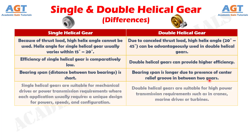Difference number 9: single helical gears are suitable for mechanical drives or power transmission requirements where each application usually requires a unique design for powers, speeds, and configuration. Whereas, double helical gears are suitable for high power transmission requirements such as in cranes, marine drives, or turbines.